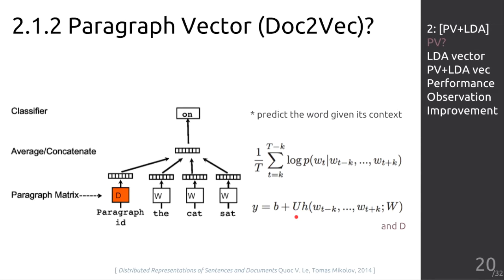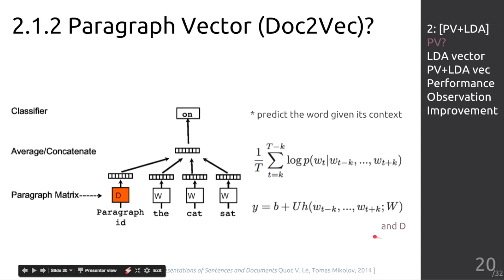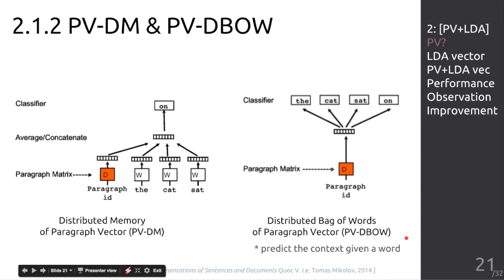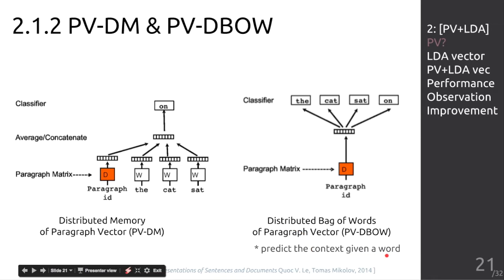In the doc2vec or paragraph vector model, we add a new matrix D, where each column is a paragraph vector. Now each movie review will receive a unique paragraph vector. Again, we do the average or concatenation and feed into softmax. The only difference between word2vec and doc2vec is that H is now constructed from both W and D. There are actually two versions of the paragraph vector model — I just described PVDM, but the other one is called PVD-Bow. Its intuition is that it predicts the context given the word.